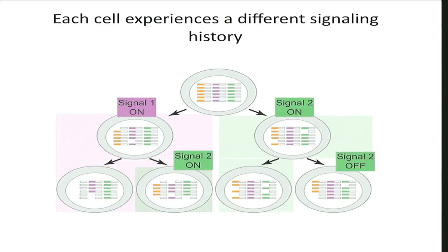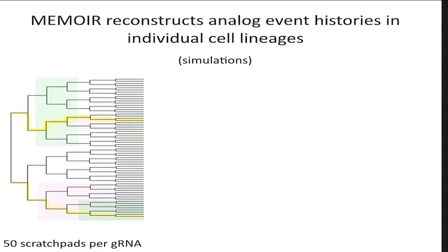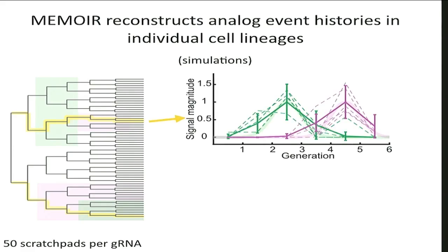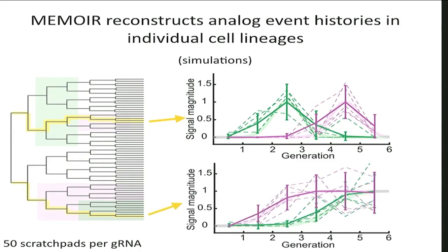If we do this, you can imagine taking cells experiencing different histories of signaling over time — this cell turns on signal one, then this one turns on signal two but not this one, and so on. Each cell lineage could have its own history. To see whether the system ought to be able to reconstruct that, we took empirical parameters measured from the first experimental system and simulated what we would expect to see. This is a sixth-generation tree with two lineages highlighted in yellow. When we reconstruct these things in simulations, we get pretty close to the real signal, and we can reconstruct different temporal sequences of signals — giving us temporal, analog dynamics over time in each lineage.